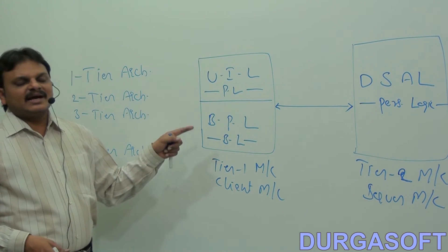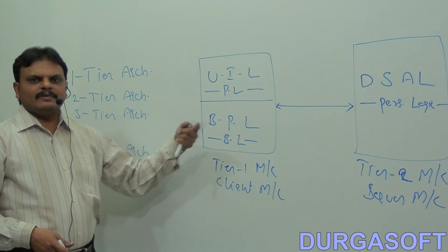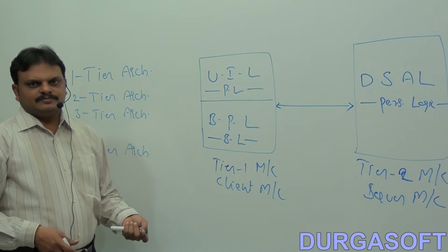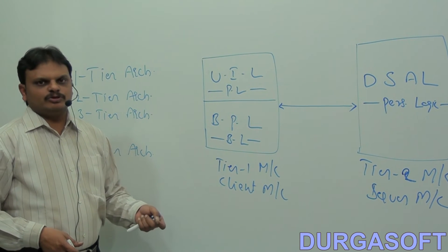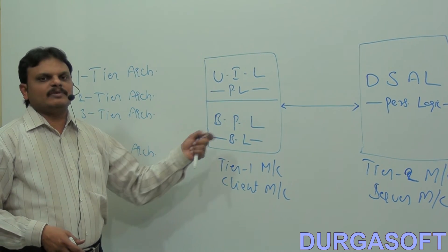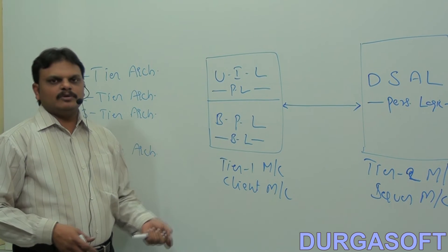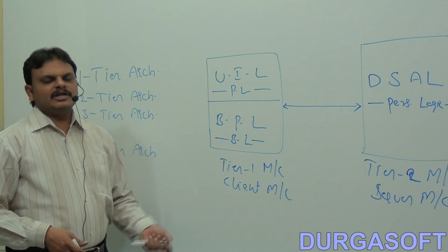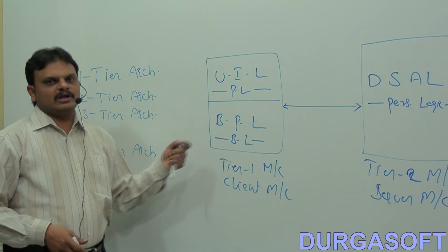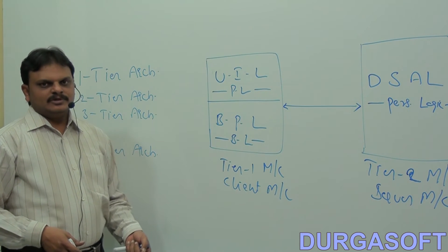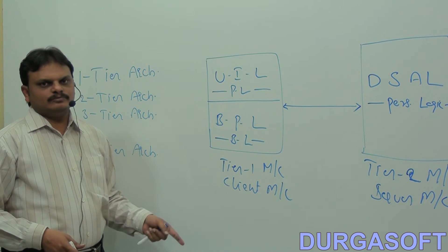It is a conventional architecture to prepare enterprise applications. It is a basic architecture to prepare enterprise applications. It is able to improve database shareability. It is able to provide a multi-user environment. This is clearly the two-tier architecture.